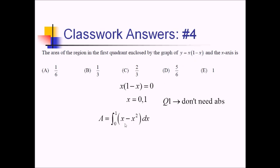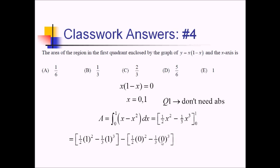Distributing the function makes the antiderivative easier. Going from left to right we get 1/2 x squared, and then subtracting 1/3 x cubed, evaluated from 0 to 1. Plugging in 1 gives 1/2 minus 1/3, and the zero terms vanish. With a common denominator that's 3/6 minus 2/6, which equals 1/6. That's choice A.